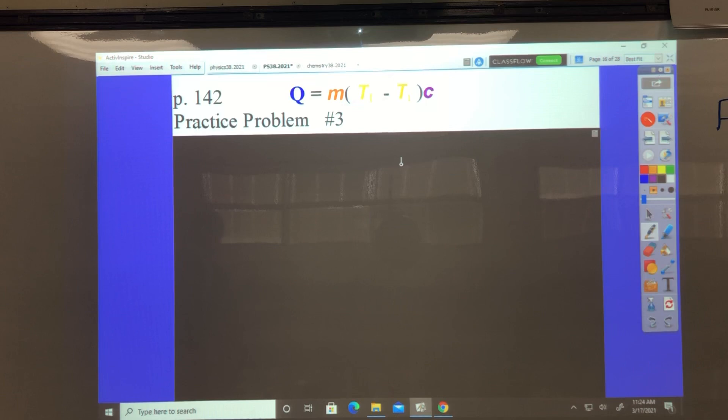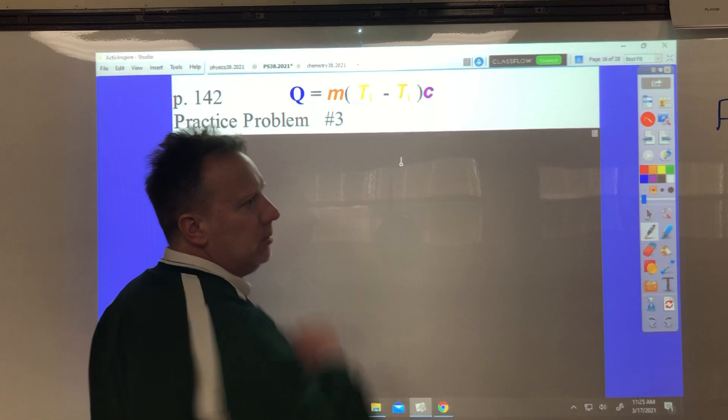A wooden block has a mass of 0.200 kilograms, a specific heat of 710 joules per kilogram times degrees Celsius, and is it a temperature of 20? What's the final temperature if its thermal energy increases by 2,130 joules? We've got every number but that one.